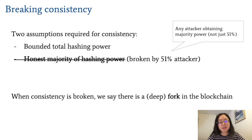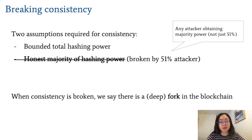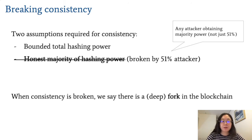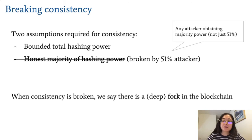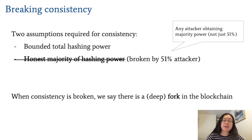So why has consistency been broken? It turns out that consistency requires two main assumptions. The first is that there must be a bound on the total hashing power in the system, so that blocks are not made too quickly and parties can't have two diverging views on the blockchain. The second — which we focus on in this work — is that there is an honest majority of power in the system. This is exactly what's broken by a 51% attacker, and when consistency is broken, we say that there is a fork in the system.